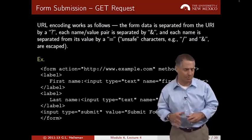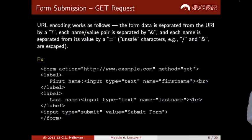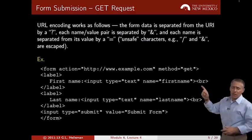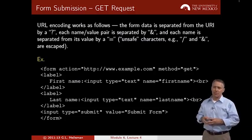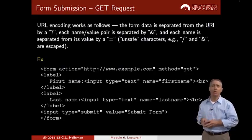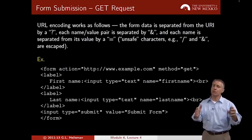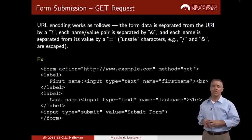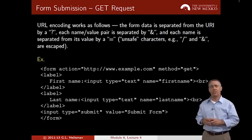Here's another example of a form. We see the form tag and where this form will be submitted to — www.example.com — using the GET method. There's an HTML label element: 'first name' will show up as a label on the web page. Then there's an input element of type text, which creates a text box for entering a first name.